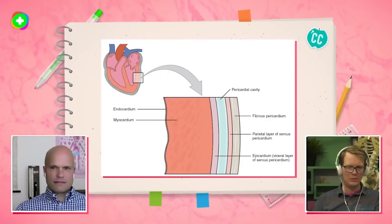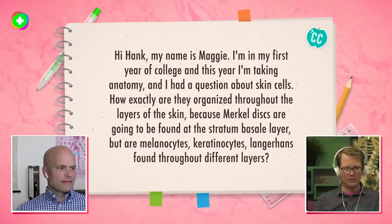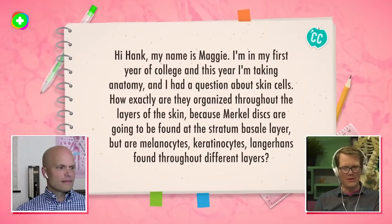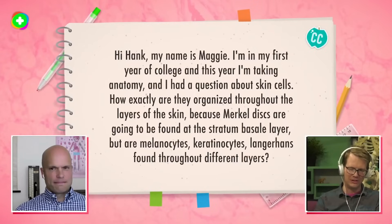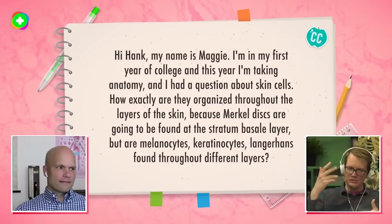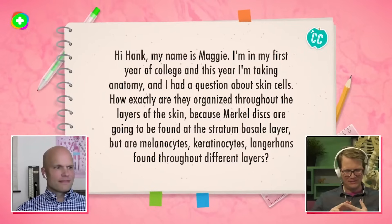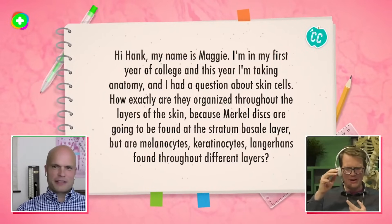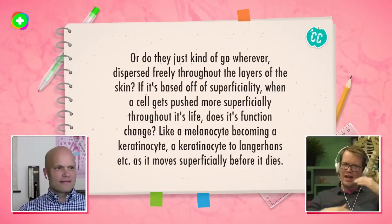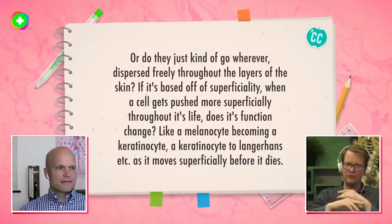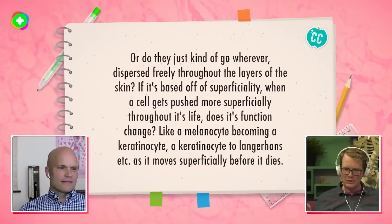Got another question — from Maggie, via Flipgrid. She's in her first year of college, first year taking anatomy, and asks: how are skin cells organized throughout the layers of the skin? She mentions different types: melanocytes, keratinocytes, Langerhans cells — which are immune cells — and asks: are they spread out, are they in layers? As skin builds up at the bottom and pushes higher, do these cells move up with it or stay in the same place?